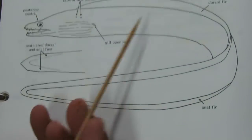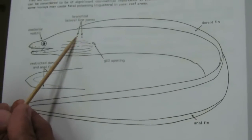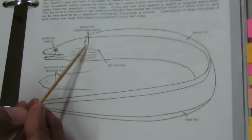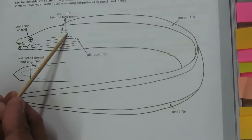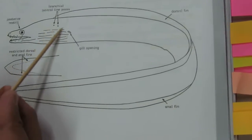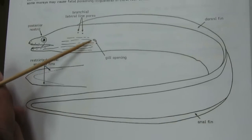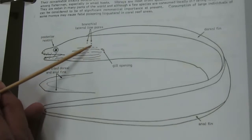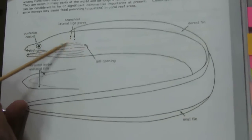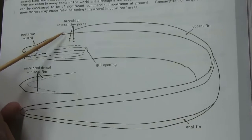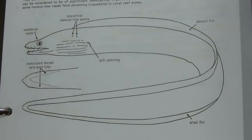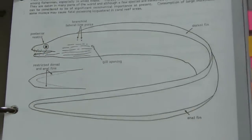Next family is Muraenesocidae. There are no lateral line pores on the body, but a reduced complement of lateral line pores is present on the head, including typically one or two above the gill opening. You can find only one or two pores above the gill opening — this is called a branchial lateral line.